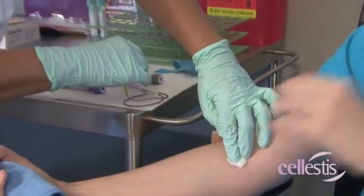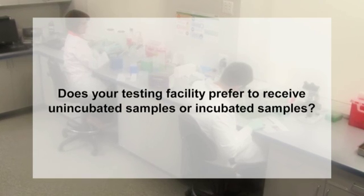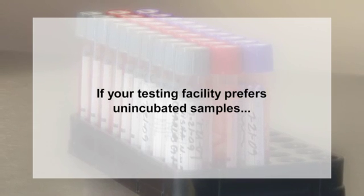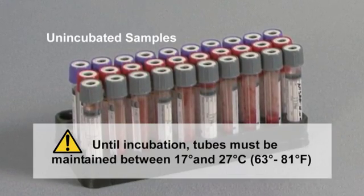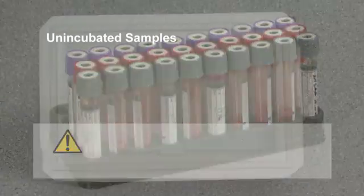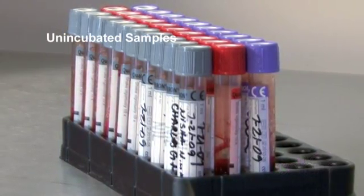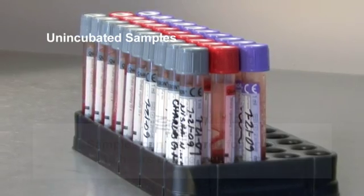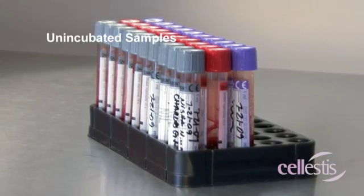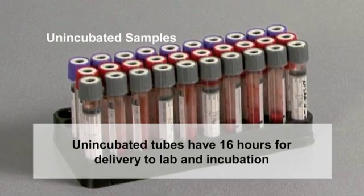In the clinic, it will be necessary for you to know the preferences of your laboratory with regard to incubation of the tubes. If your testing facility prefers unincubated samples, after shaking and prior to incubation, maintain tubes within 17 to 27 degrees Celsius or 63 to 81 degrees Fahrenheit. Do not refrigerate the tubes or store on ice. Multiple samples can be batched and stored for up to 16 hours before the incubation step, although incubation as soon as possible after blood collection is preferable. For unincubated tubes, you have up to 16 hours for the tubes to be delivered to the laboratory before incubation must begin.